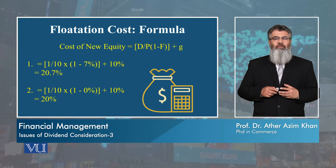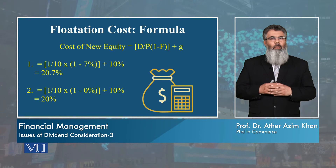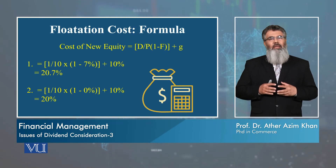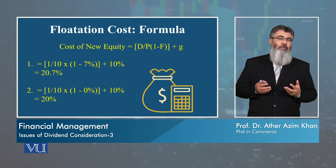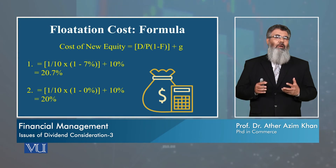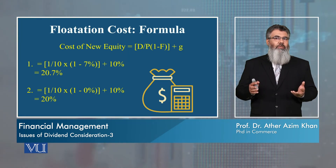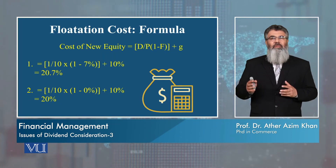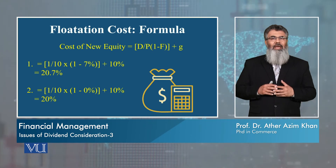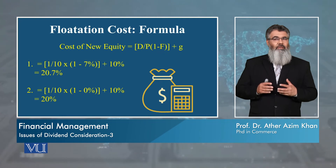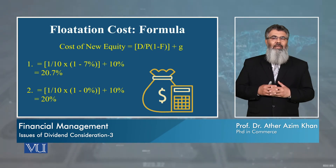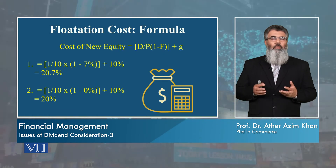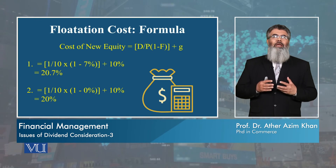Now let us put in some values and see how flotation cost actually affects the cost of new equity. If a firm is issuing new equity and there is a flotation cost, will the cost be the same as without flotation cost, or different? Suppose the dividend is Rupee 1, the price is 10, the flotation cost ratio is 7%, and the growth rate is 10%. The calculation comes out to 20.7%. That means the cost of new equity for the company will be 20.7%.